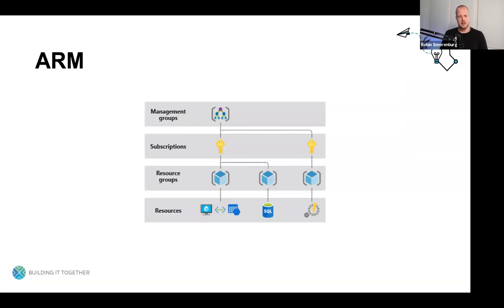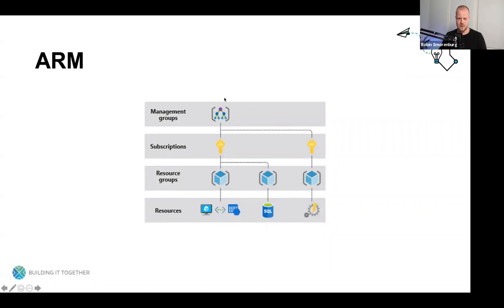Next are ARM scopes. When you work with ARM, you have four levels or scopes: management groups, subscriptions, resource groups, and resources. If we look at our cake, we also have Azure Active Directory — these are the scopes.